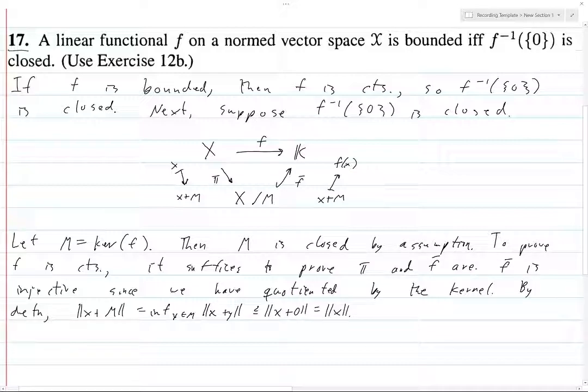That's certainly going to be less than or equal to a particular element of m, which is 0. This is right by definition. This is just the norm of the projection of x.